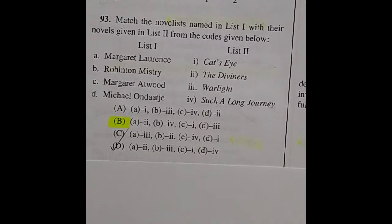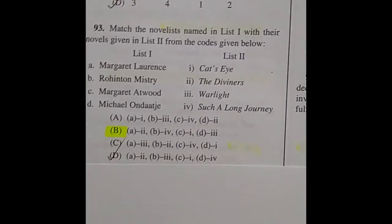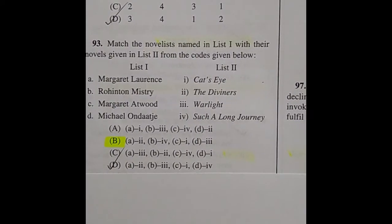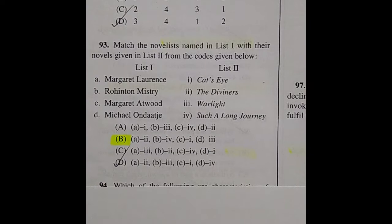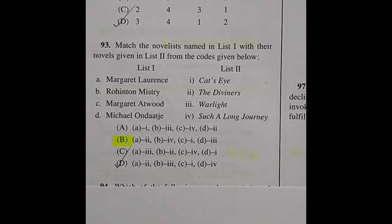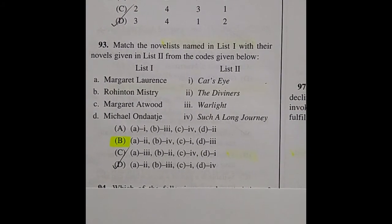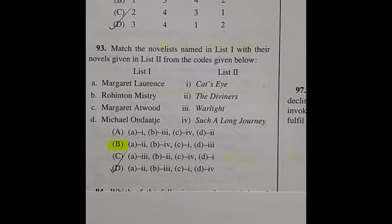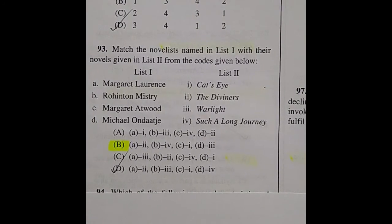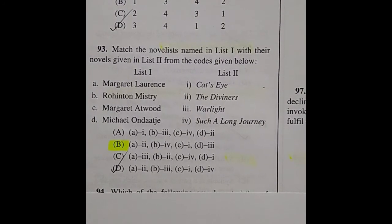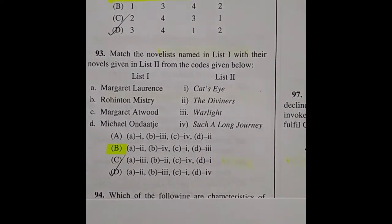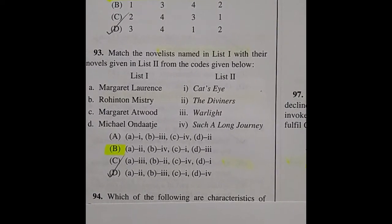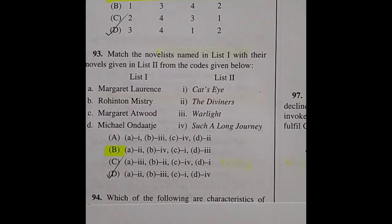Question 93: Also a matching list — the right answer is option B: Margaret Laurence is related to The Diviners; Rohinton Mistry is related to Such a Long Journey; Margaret Atwood is related to Cat's Eye; Michael Ondaatje is related to Warlight.